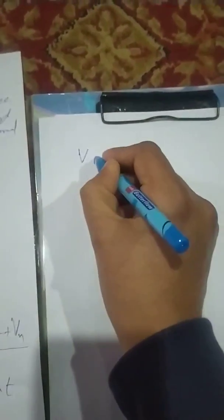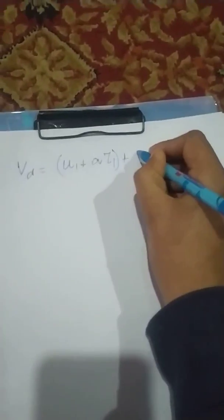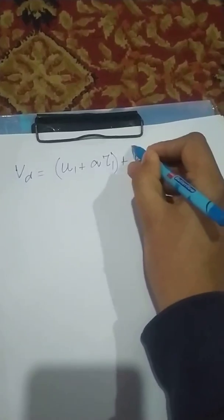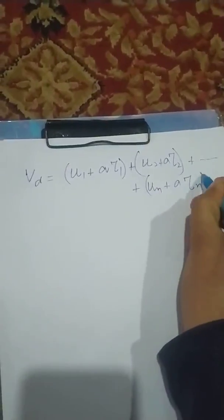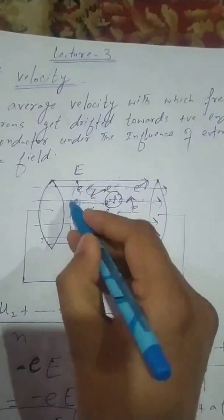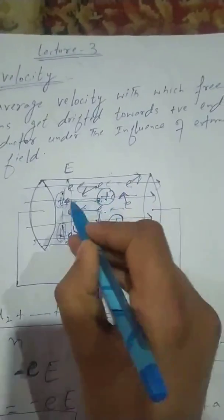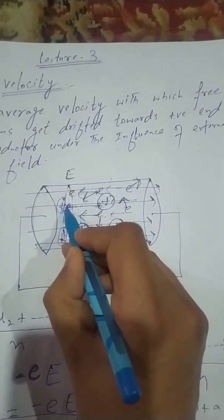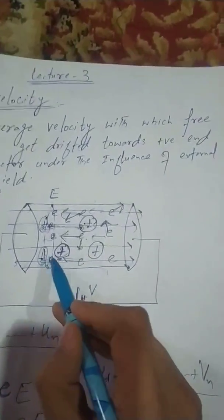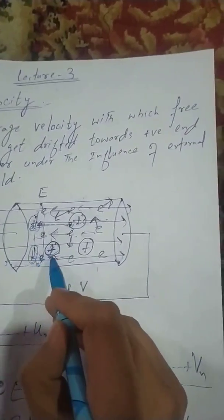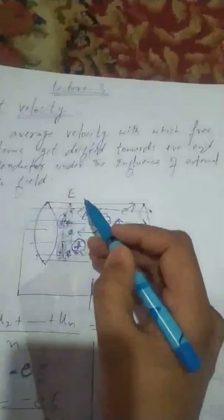So drift velocity can be written as: v_d = (u1 + a·τ1 + u2 + a·τ2 + ... + un + a·τn) / n. Here τ (tau) is the relaxation time — the time from one collision to the next. For each electron traveling between kernels, the collision time is different because some kernels are closer. So τ1, τ2, ... τn are the individual relaxation times for each electron.